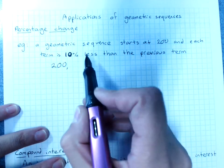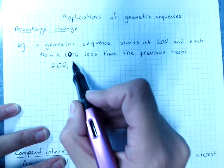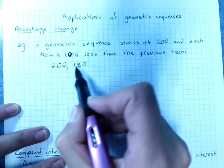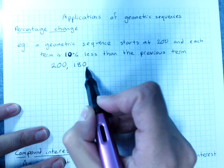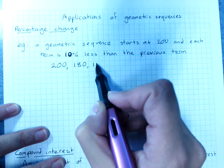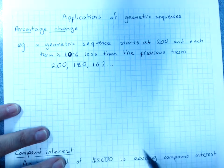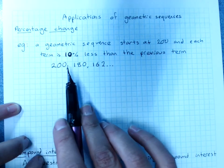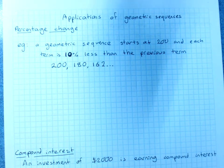So if we just wrote this pattern: 200, 10% of 200 is 20, so 200 take away 20 is 180. 10% of 180 is 18, so 180 take away 18 is 162. And that would keep going. You'll see it's not taking away a fixed amount. It does have a common ratio.